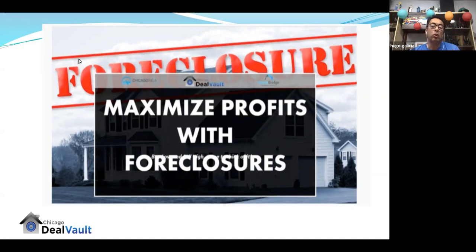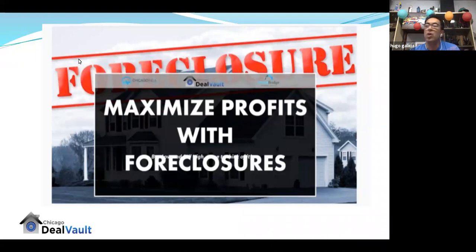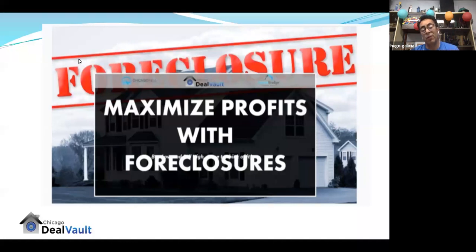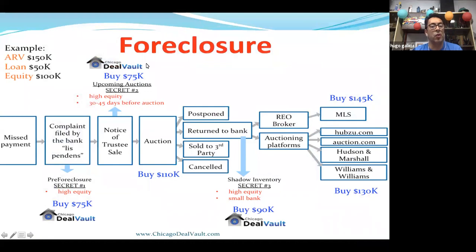When owners enter the foreclosure process, we're going to be targeting two types of leads: one, they have to have a lot of motivation, and two, they have to have a lot of equity. That's how we maximize from the foreclosure process — both features have to apply. For example, if John Doe's property is worth $200,000 after repair value but he only owes $50,000, he's got a lot of equity. But if he's not extremely motivated to sell, that's not going to be a hot lead.